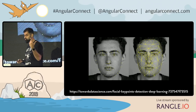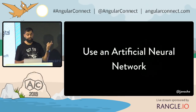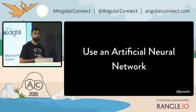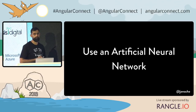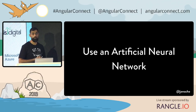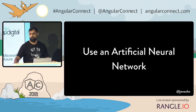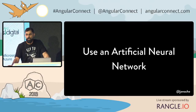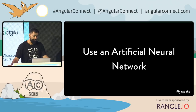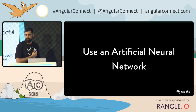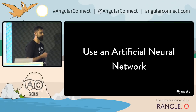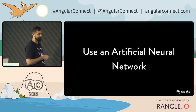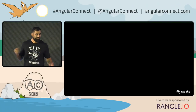The second step is to use an artificial neural network. Why is it called artificial? Because it's actually based in biology — in neurons. This is a neuron. Your brains are hopefully full of these.